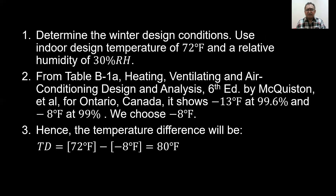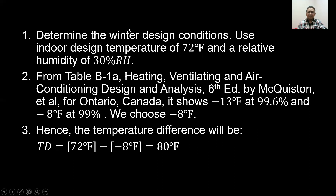Determine the winter design conditions. Use an indoor design temperature of 72°F and a relative humidity of 30%. From table B-1A, heating, ventilating, and air conditioning design and analysis, sixth edition by McQuiston, for Ontario, Canada, it shows outdoor conditions of negative 13°F at 99.6% and negative 8°F at 99%. We choose minus 8°F. Hence, the temperature difference will be 72°F minus negative 8°F, which equals 80 degrees Fahrenheit.